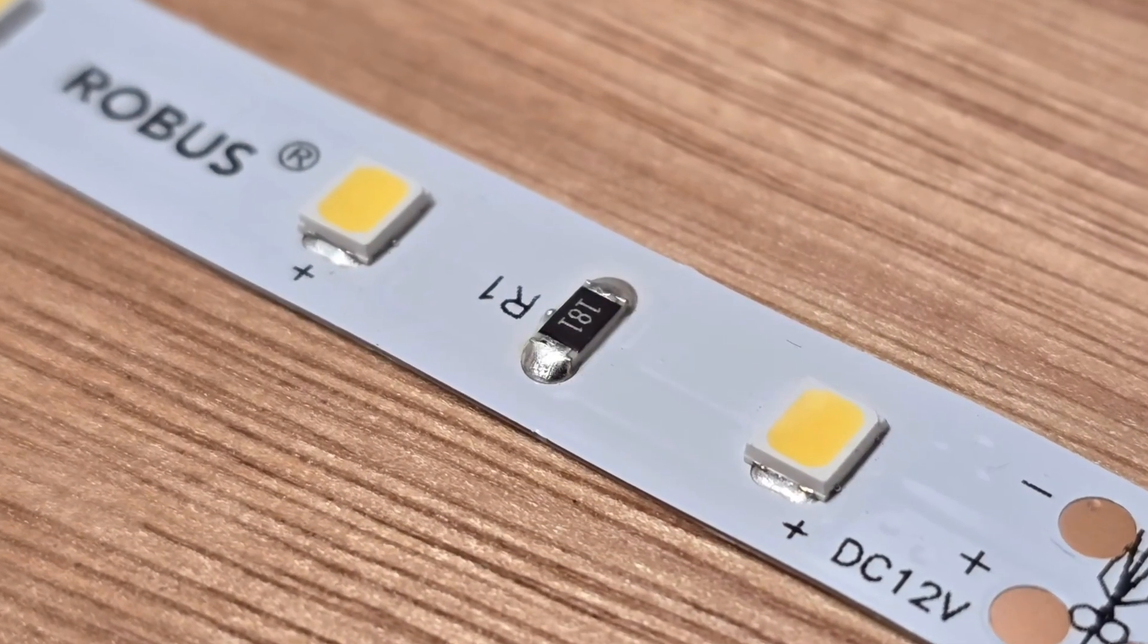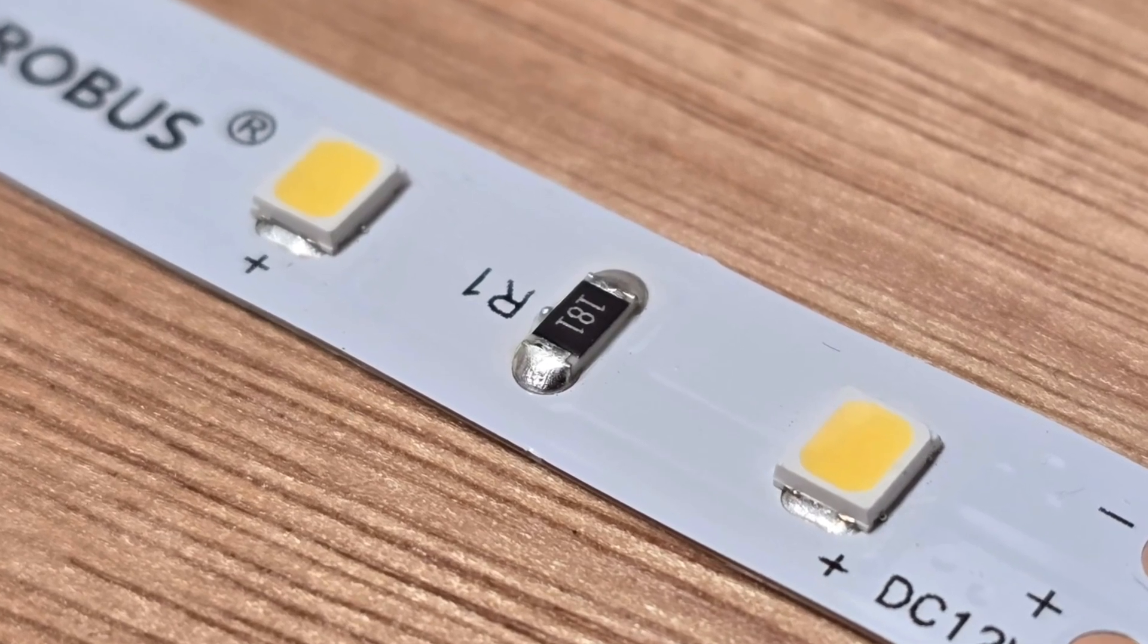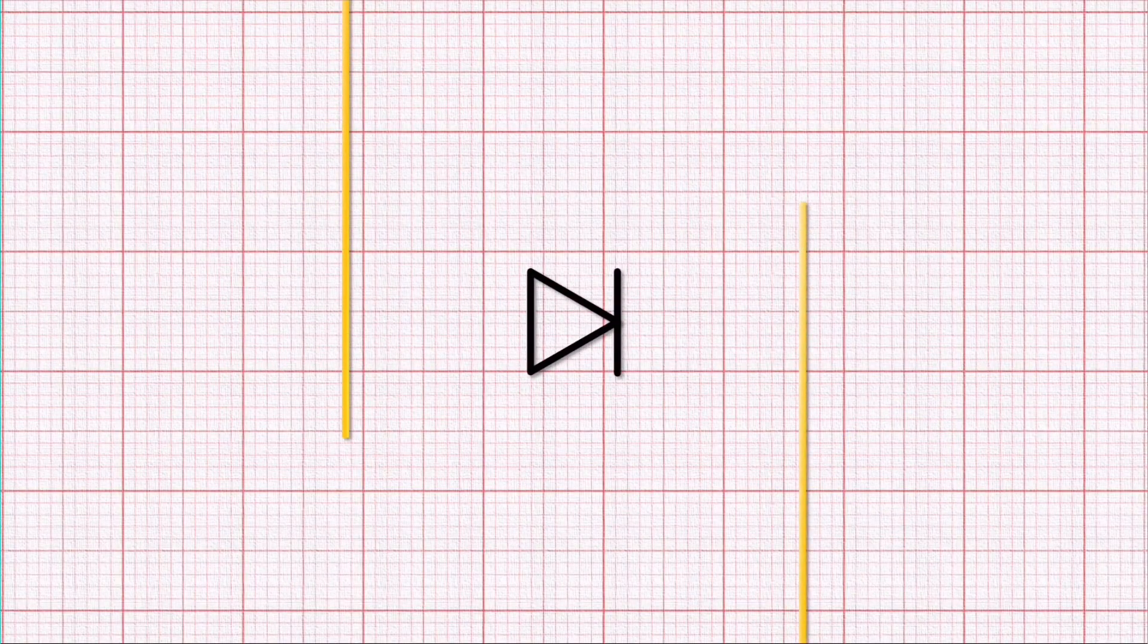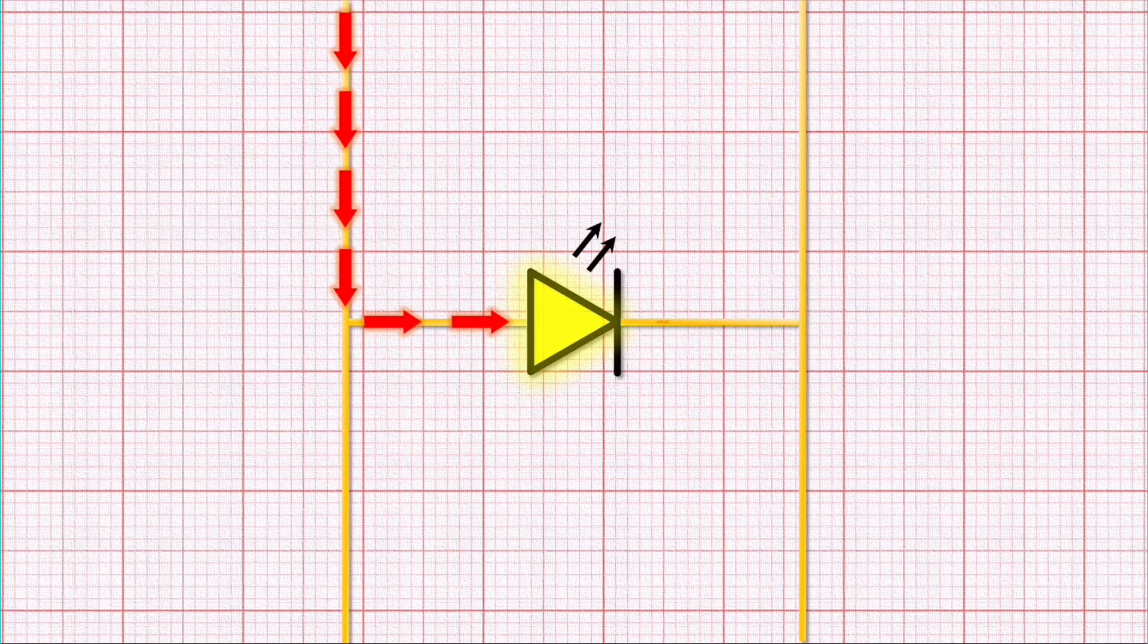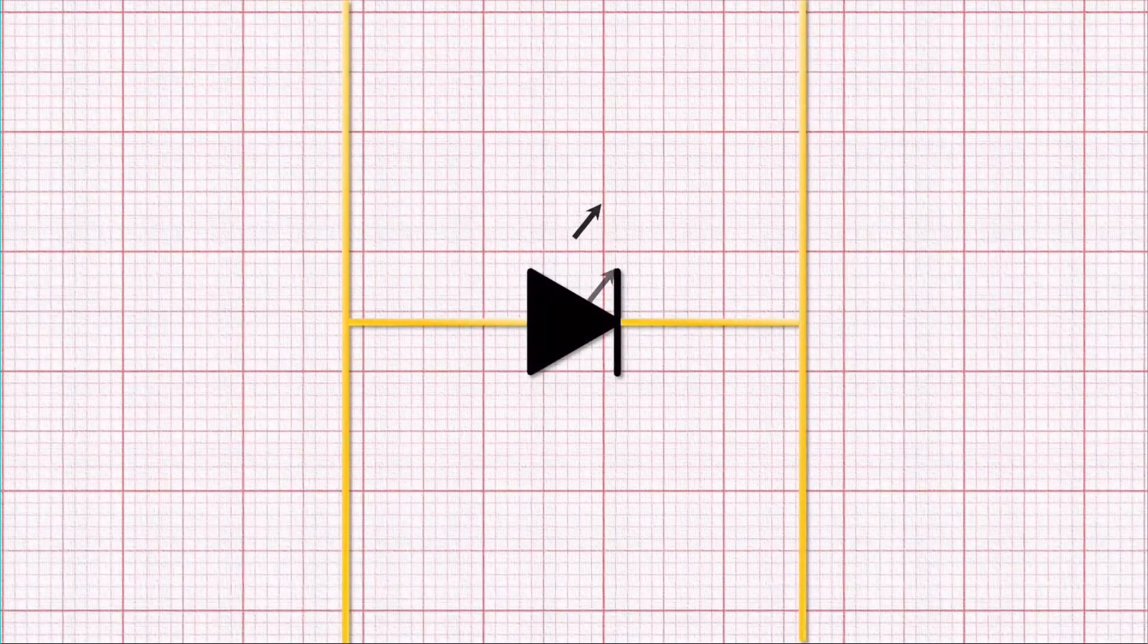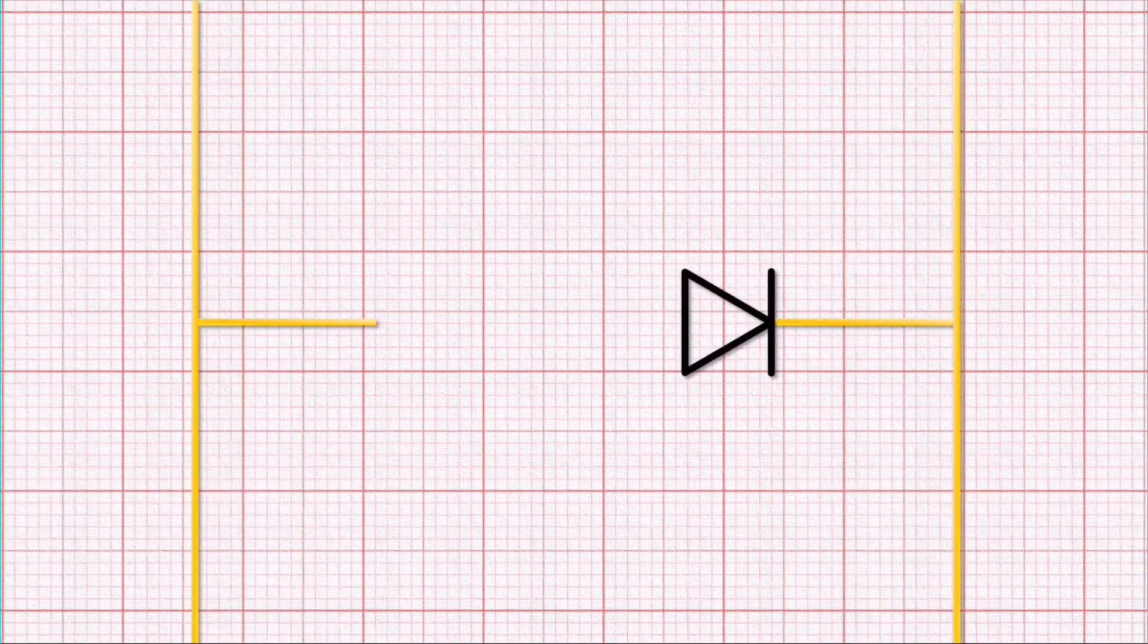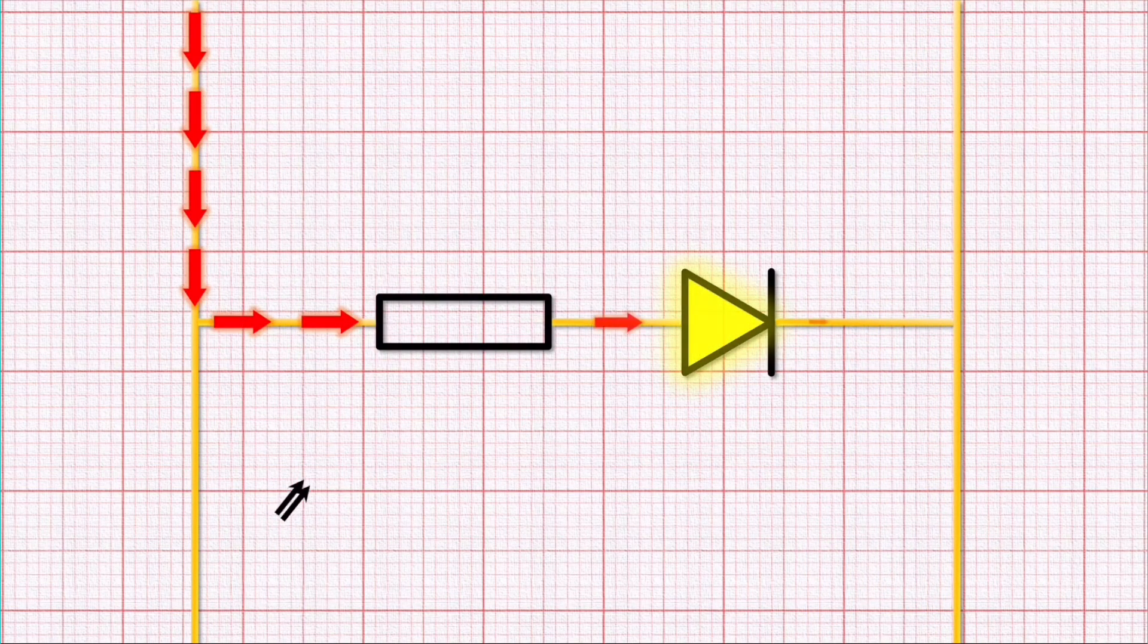The other component that you can see on the strip is this tiny black component. Although this doesn't emit any light, it's every bit as important as the LEDs. When connected up correctly to a voltage source, the internal resistance of an LED becomes really small, meaning that lots of current will flow through it. For an LED, this high current can very quickly lead to burning the LED out. To prevent this from happening, a resistor is wired in series with the LED and this acts as a current limiter, preventing too much from flowing through the LED and damaging it.